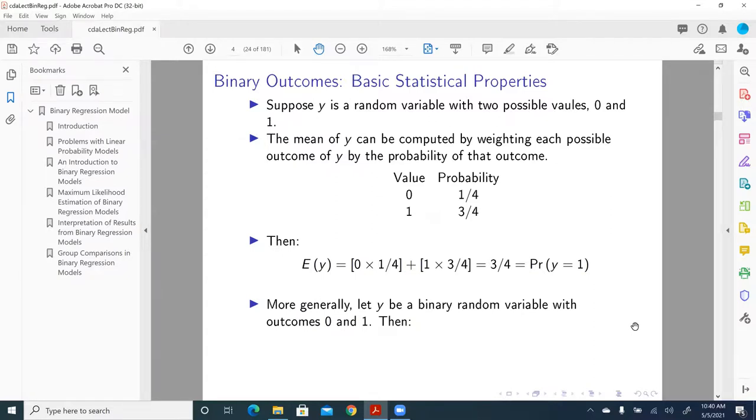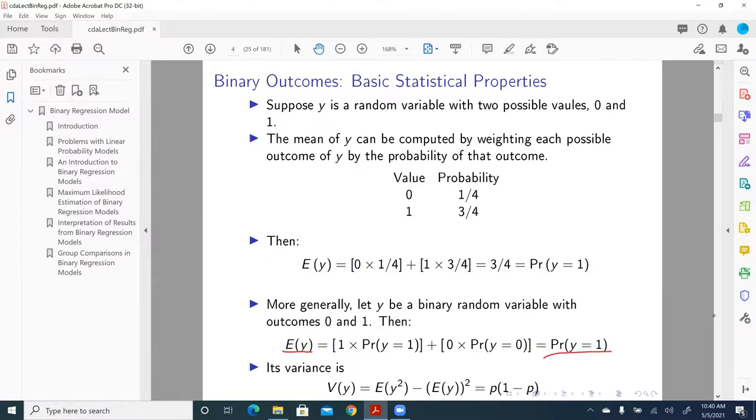More generally, let y be a binary random variable with outcomes 0 and 1. Then, the expectation, that is, the mean of y is equal to the probability of y equal to 1. And the variance of y is equal to this term: p multiplied by 1 minus p. What is p here? P is the probability y equal to 1. And here, I haven't shown you the derivation, which requires some background in mathematical statistics. We will cover that in later sessions.